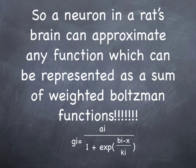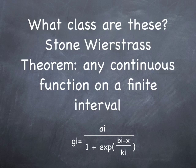So basically, a neuron in a rat's brain can be approximated by any function which can be represented as a sum of weighted Boltzmann functions. So it's kind of like a Fourier transform, almost, that's going on here.